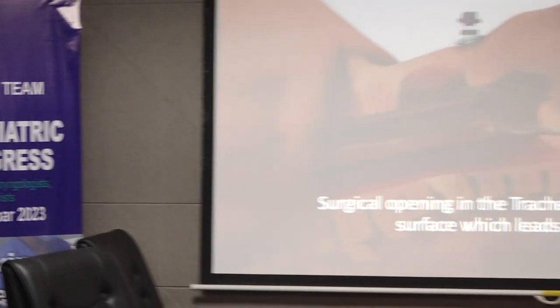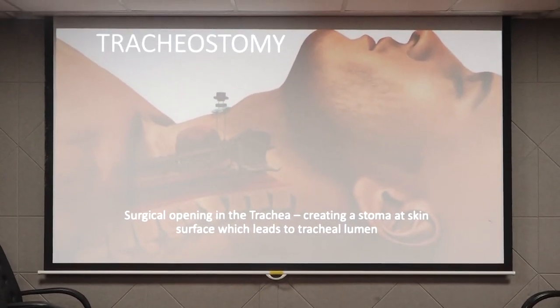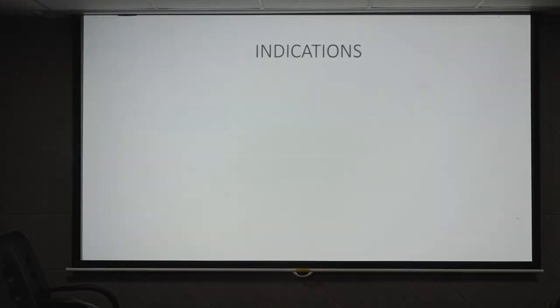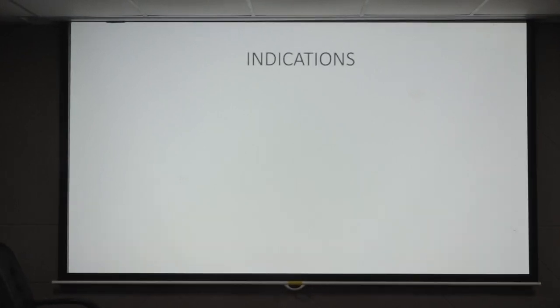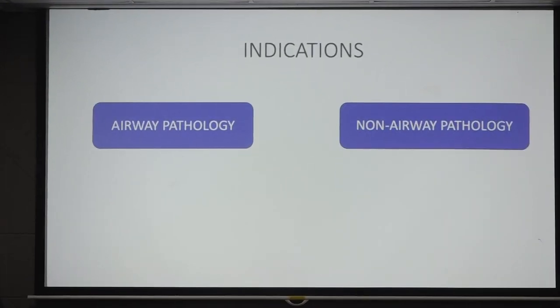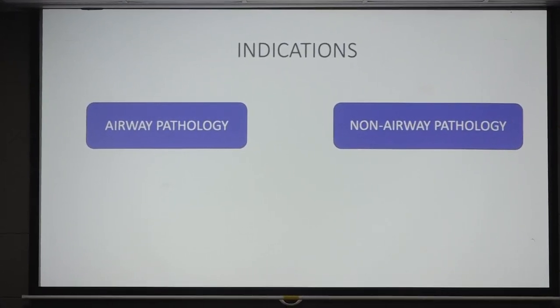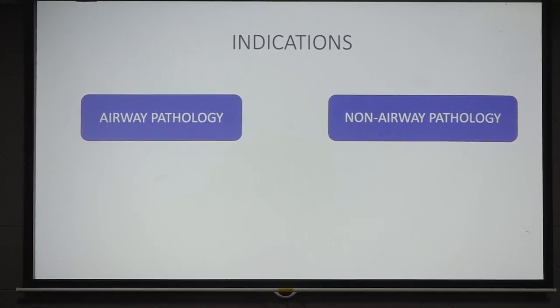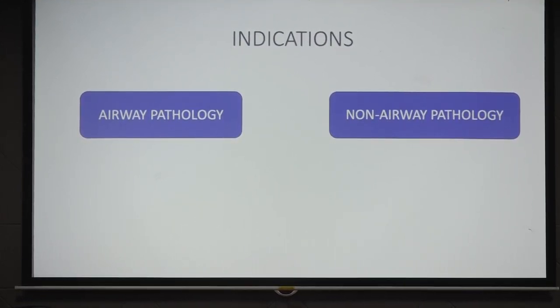I am talking about a relatively simple topic, but I think the buck stops here at tracheostomy. It is just a surgical opening in the trachea where we create a stoma at the skin surface which leads to the tracheal lumen. Indications depend on the situation — either obstruction or toileting purposes — broadly divided into airway pathology and non-airway pathology.